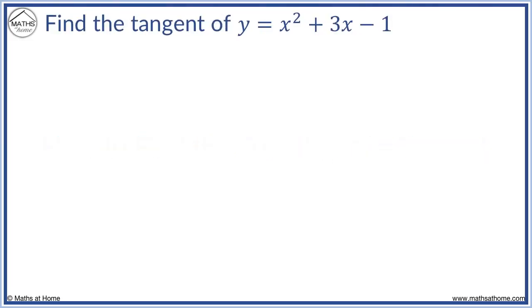Find the tangent of y equals x squared plus 3x minus 1 at (1, 3). Step 1 is usually to substitute x into the original function to find y.